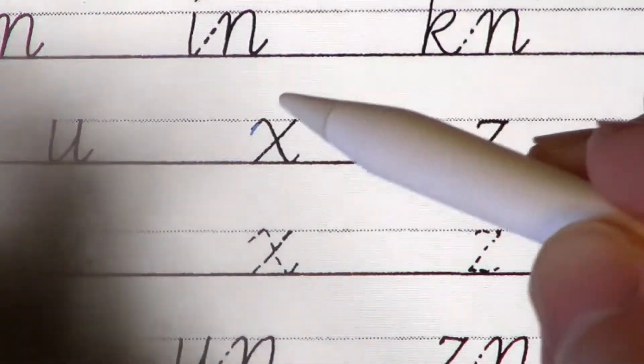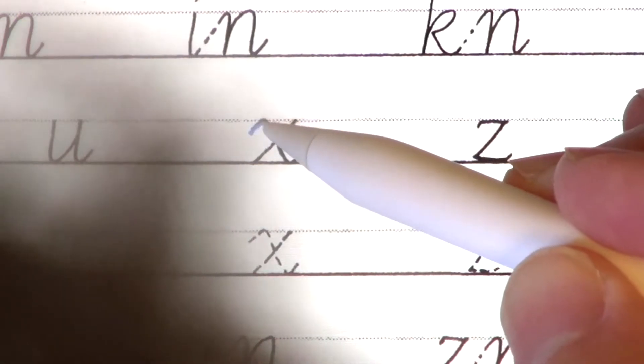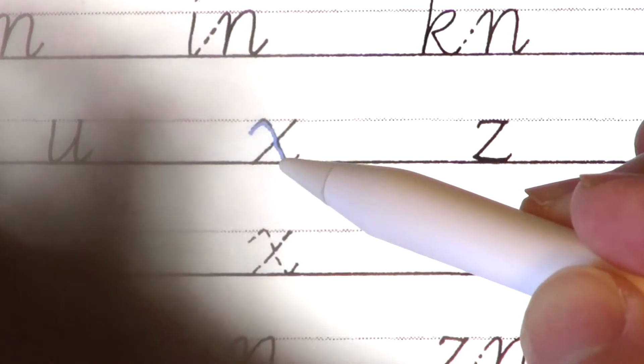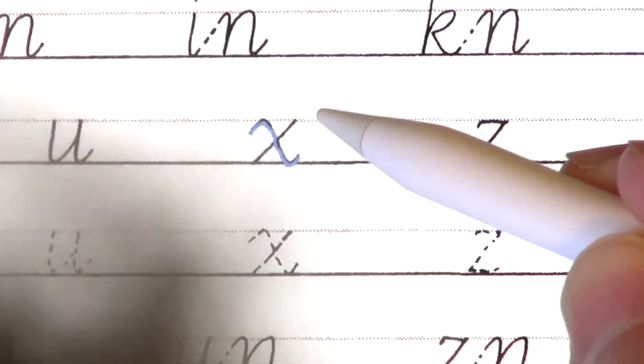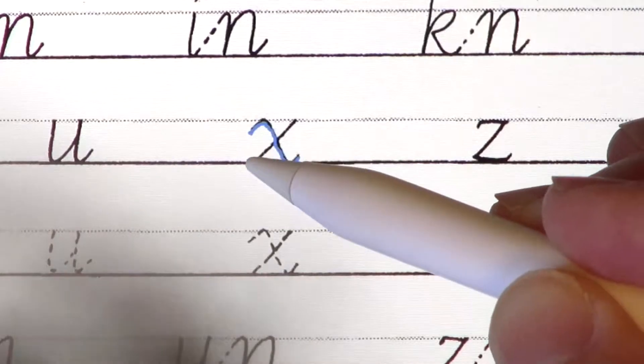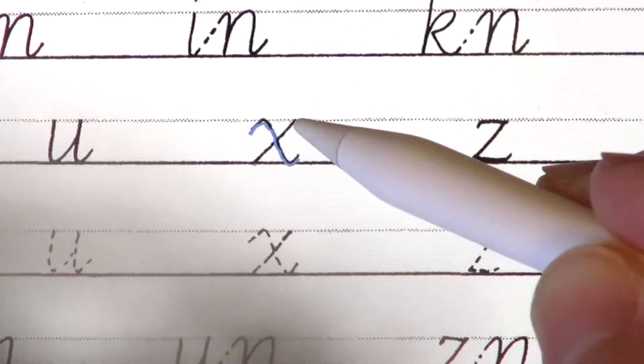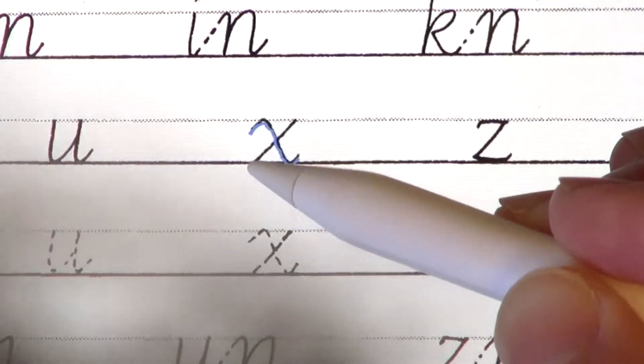Let's begin by copying. Soft angle entrance serif, straight down to the baseline, soft angle exit serif. We move over to stroke number 2. Notice how far over we are.